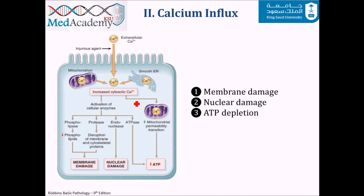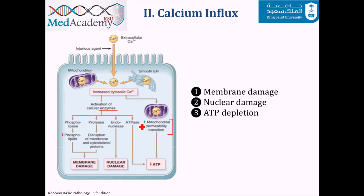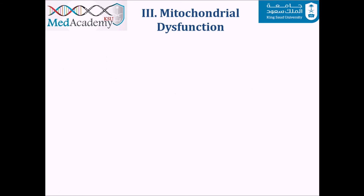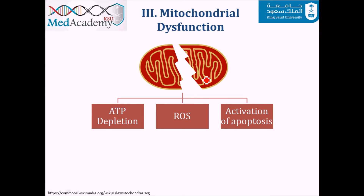The second principle is calcium influx. Extracellular calcium entering the cell activates several enzymes. Phospholipases degrade phospholipids, which are an integral part of the cell membrane. Proteases degrade membrane proteins and the cytoskeletal system, resulting in membrane damage. Endonucleases cause nuclear damage, and ATPases cause further ATP depletion. Calcium influx also directly increases permeability of the mitochondrial membrane, which connects to principle five.